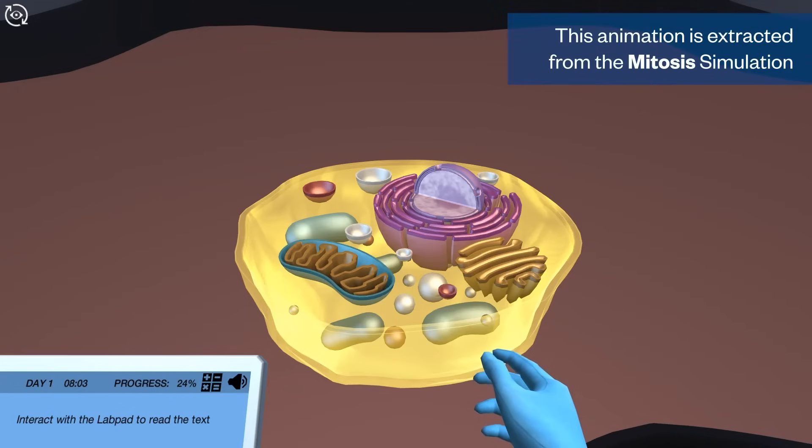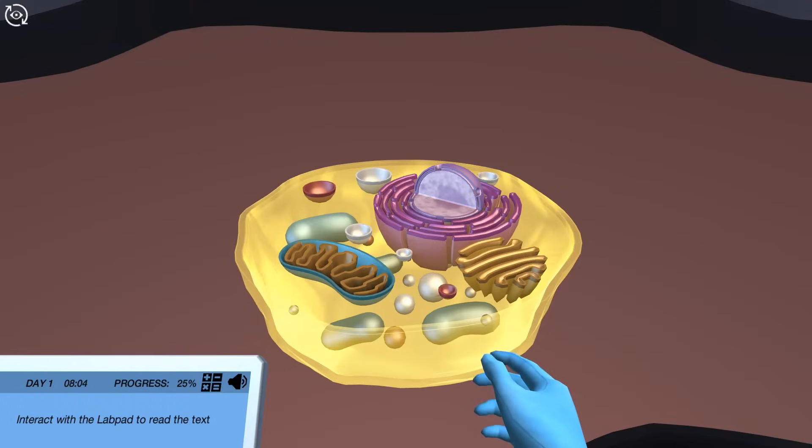When a cell divides, both daughter cells need to contain all the organelles. The nucleus stores all the information for building the cell's components. This information also has to be duplicated before the cell divides.